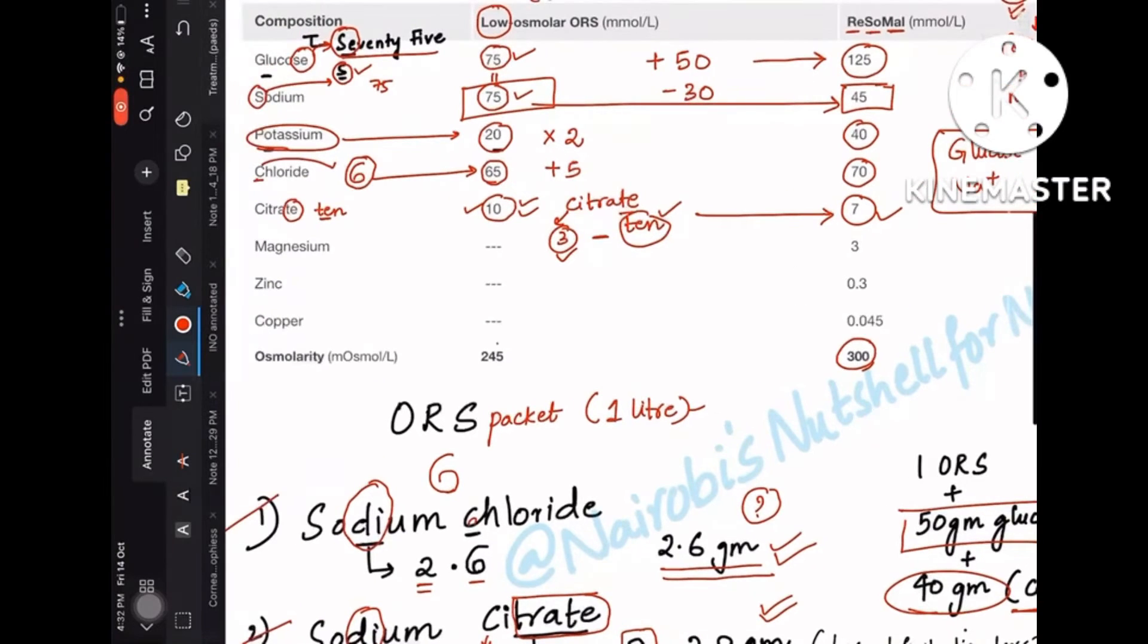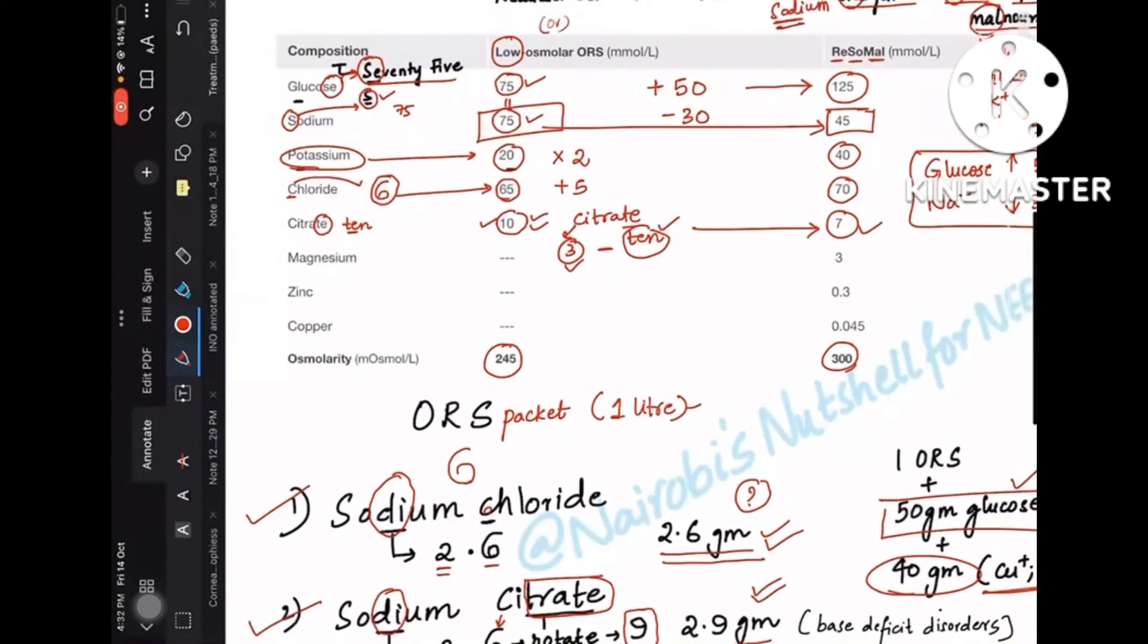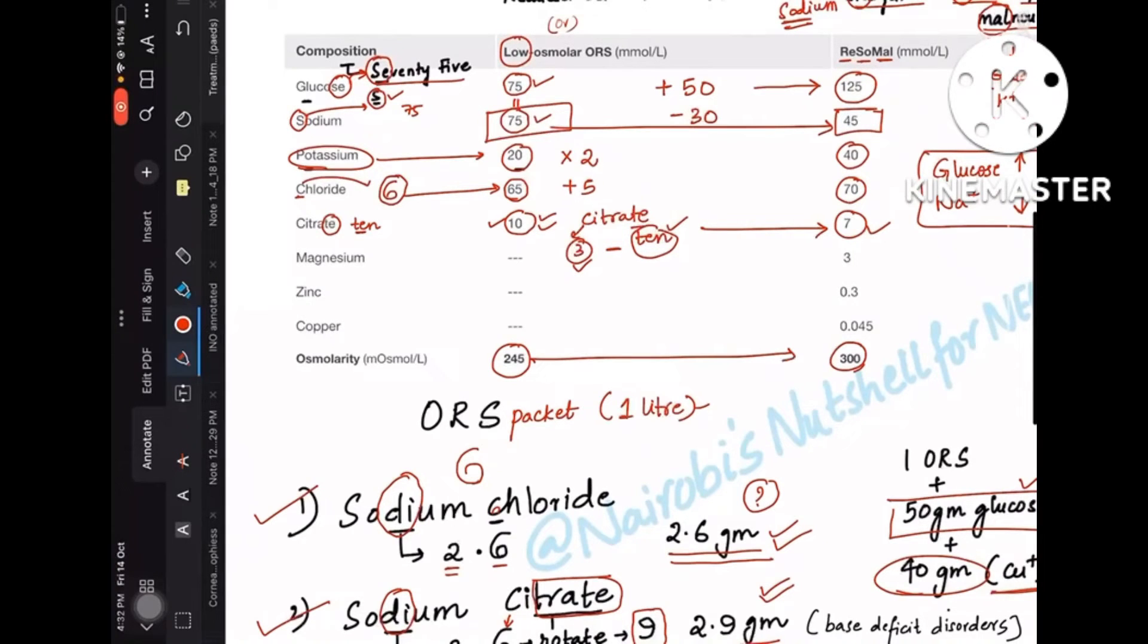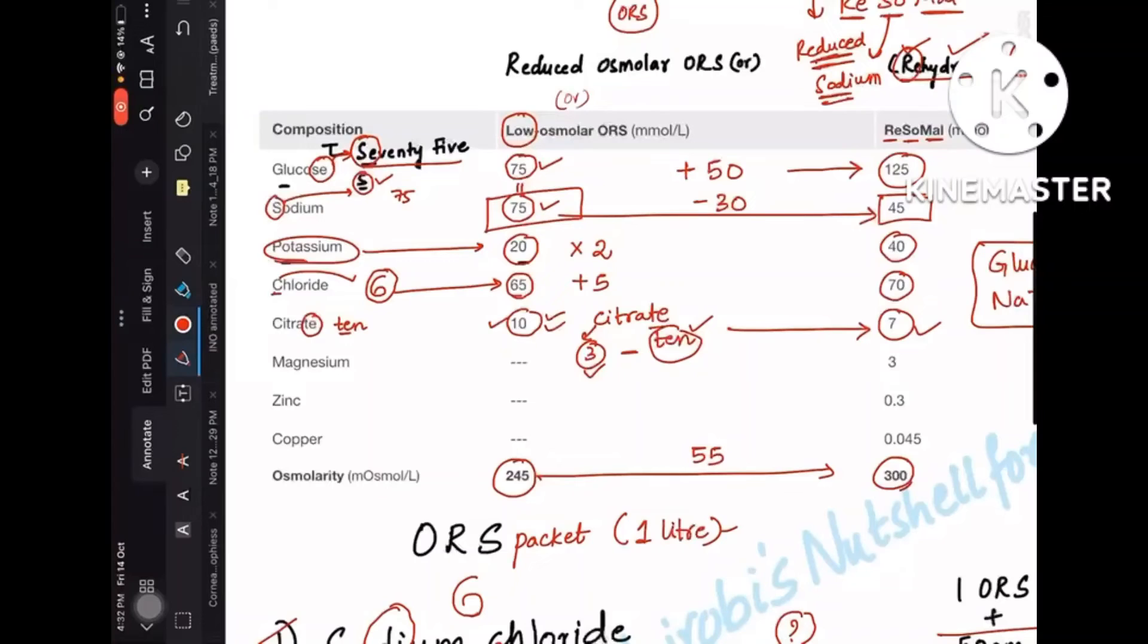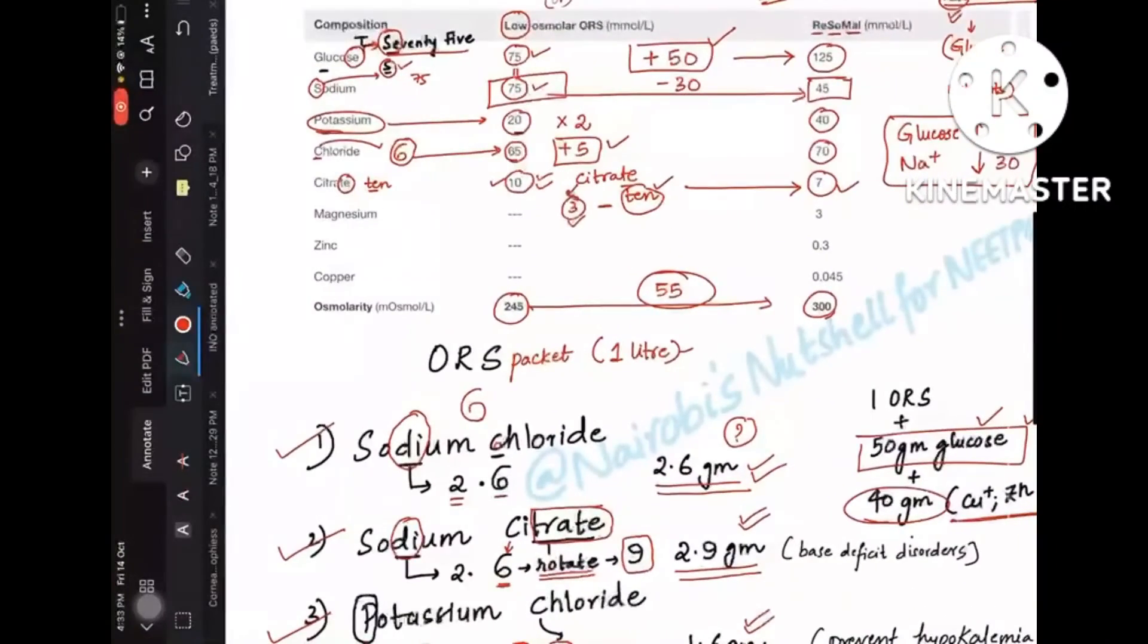So look at here, here you have a difference of 55 between these two. So you are adding 50 for glucose and plus 5 for chloride. Glucose and chloride, you are adding 150 and 1 is 5. Total, this 55 is increasing, but it's like a tricky thing only. But at least few values you can remember—all these are not confusing.